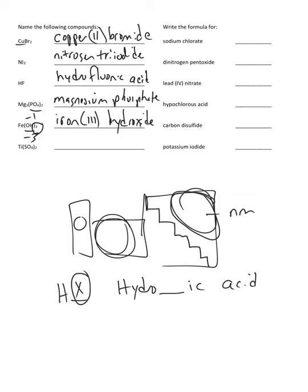Ti(SO4)2: Ti is titanium, in the D block. SO4 is a polyatomic ion called sulfate. Sulfate has a negative two charge; there are two of them, giving negative four total. If you're not strong on polyatomic ions, you can refer back to that first page of the packet for naming purposes. Since the total is negative four, the one titanium must have a charge of plus four — so this is titanium(IV) sulfate.